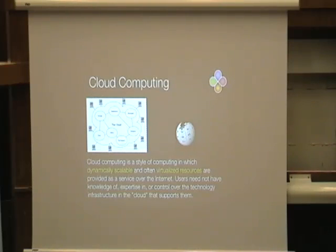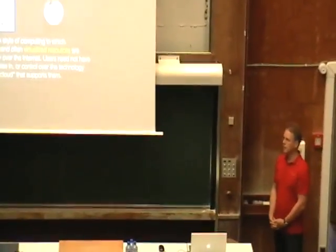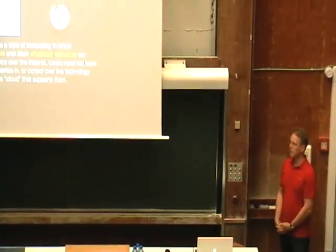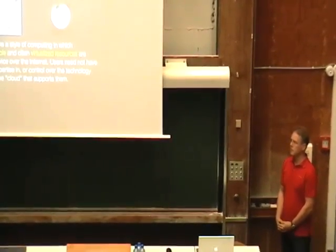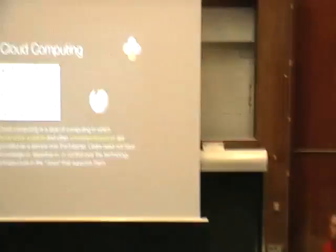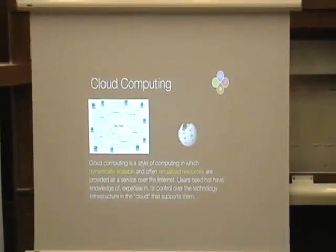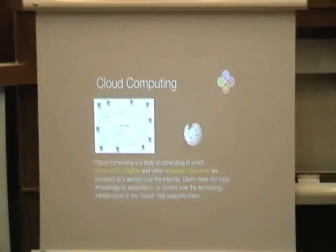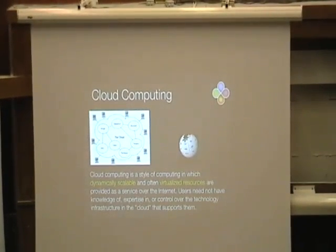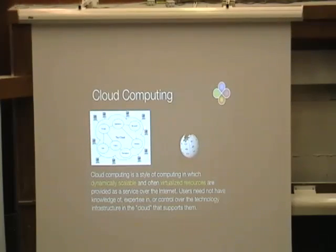A third type is Infrastructure as a Service, and that's a bit more low level. They give you pieces of infrastructure you need — for example, computing power, databases, messaging systems, storage. It's up to you to combine these infrastructure elements to have a good architecture and a working system. That was a short introduction to cloud computing.